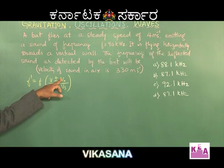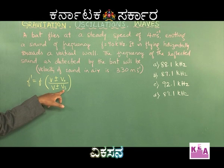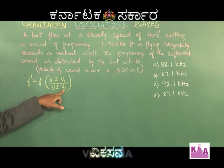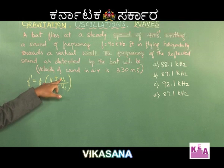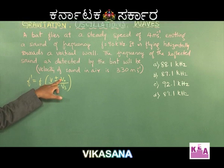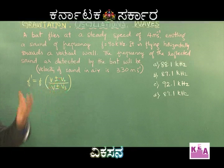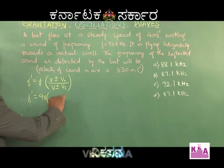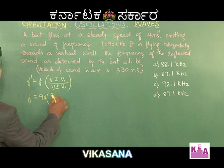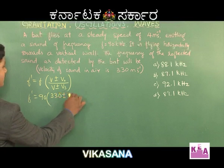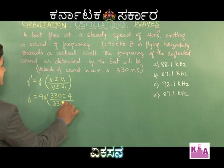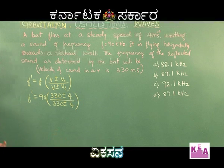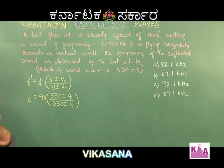The true frequency F is 90 kHz, V is 330 m/s. V_O is the speed of the observer — the bat — which is 4 m/s. V_S is the speed of the source, also the bat at 4 m/s. So substituting: F' = 90 × (330 ± 4) / (330 ± 4). But the challenge is to find the appropriate sign — we need to know the sign conventions properly in the Doppler effect.